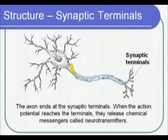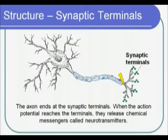When the neural signal reaches the end of the axon, the electrical signal needs to be converted to a chemical one. So when the neural signal reaches the synaptic terminal, chemical messengers called neurotransmitters are released.